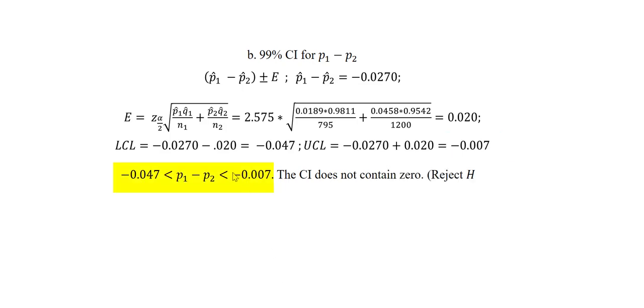The confidence interval as we can see here does not contain 0. So that means that we reject the null hypothesis. This also supports the result from the first part of the question.